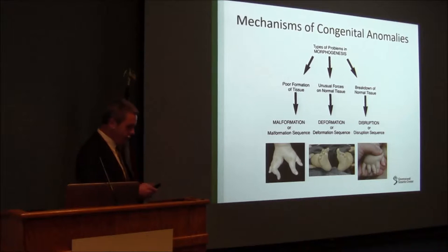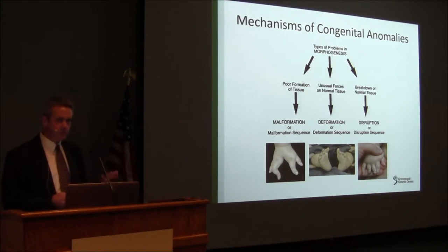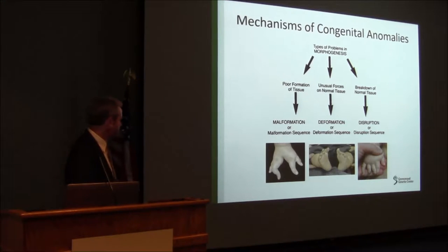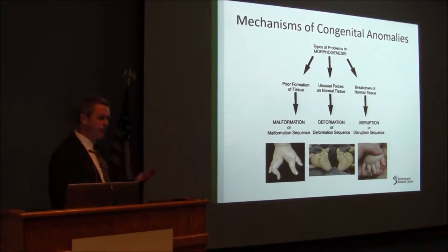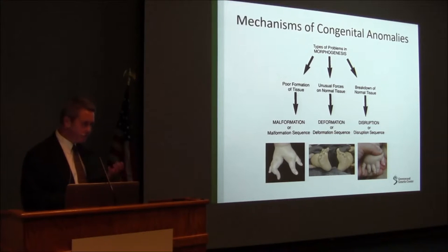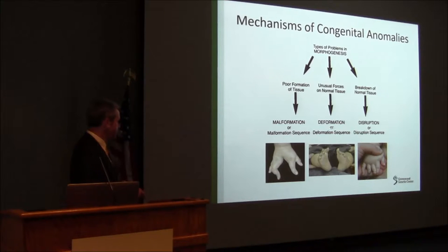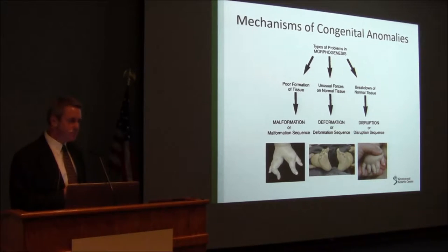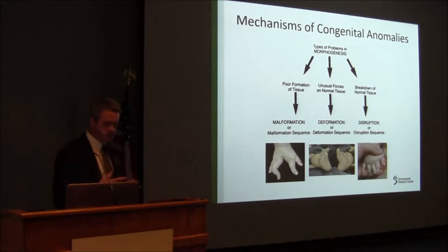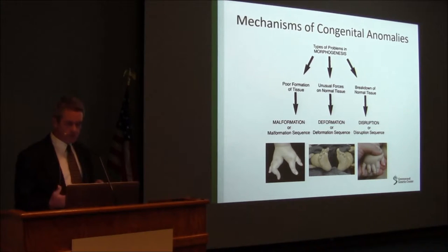Congenital anomalies are certainly an important area to think about how to apply this thinking because they are such an important cause of physical and developmental disability. When we see patients with these findings, we try to first think about the mechanism of causation. We think about malformations as differences in the body resulting from a primary abnormality of development that's typically genetic in origin, as opposed to deformations and disruptions — which are non-genetic, caused by physical forces, vascular changes, or amniotic bands.